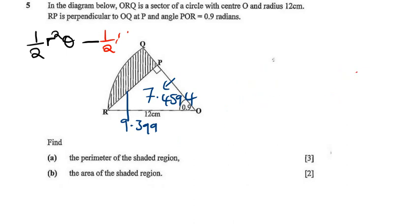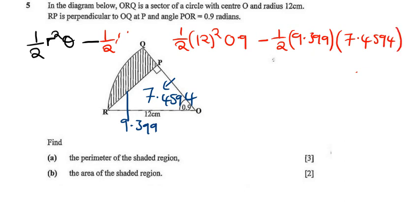So the area: we have half, our radius is 12 squared, the theta is 0.9, minus half base times height. The base we can take to be 9.399 and the height to be 7.4594. So grab your calculator: 0.5 times 12 squared times 0.9 minus 0.5 times 9.399 times 7.4594.